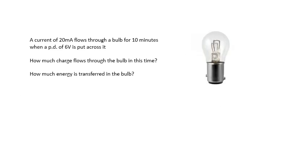A current of 20 milliamps flows through a bulb for 10 minutes when a PD of six volts is put across it. How much charge flows through the bulb in this time? How much energy is transferred in the bulb? Pause the video and have a go.